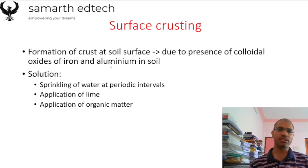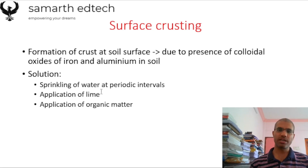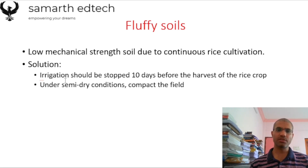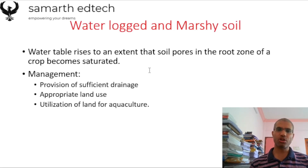Surface crusting occurs at the soil surface when colloidal oxides of iron and aluminium are present. Solutions include sprinkling water and applying lime and organic materials. Fluffy soils have low mechanical strength due to continuous rice cultivation. Solutions are to stop irrigation ten days before harvest and to do compacting under semi-dry conditions.